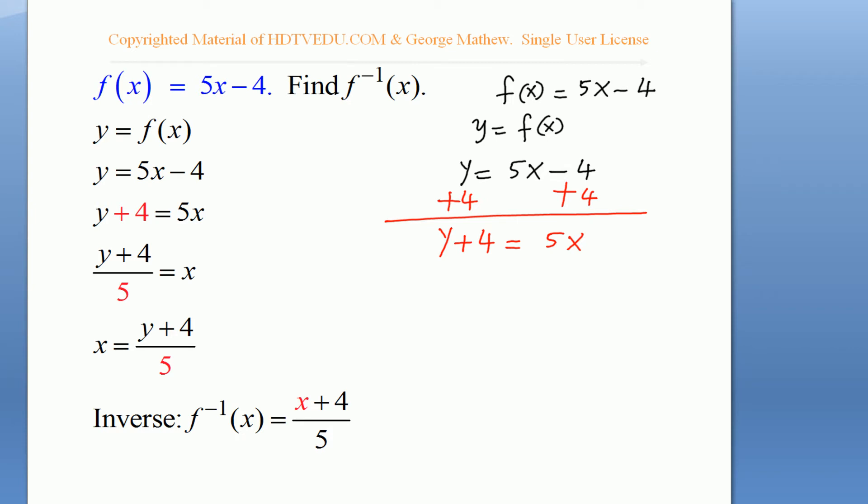Our goal is to isolate x by itself and get x in terms of y. We need to divide both sides by 5. Dividing both sides by 5, we get y plus 4 divided by 5 equals x.